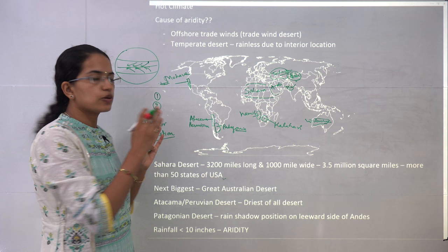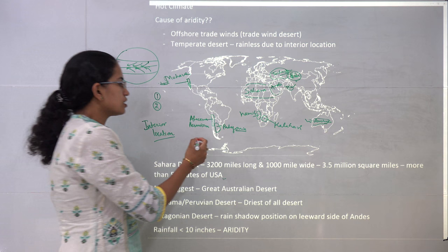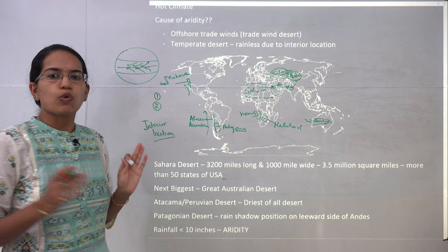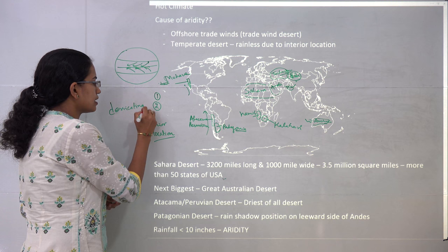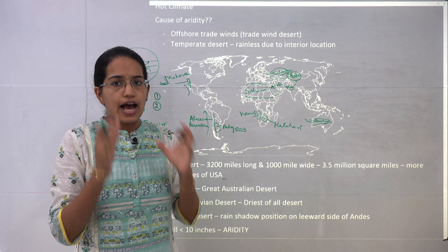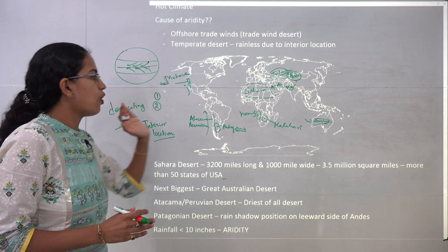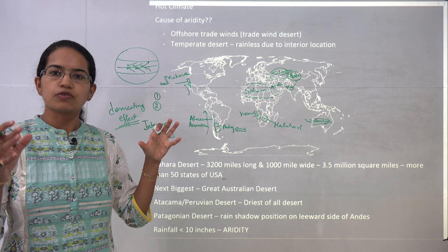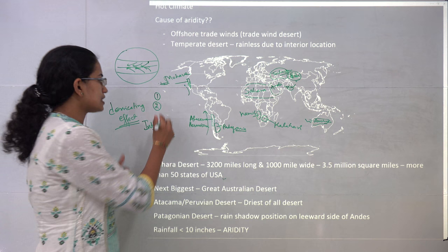The second important reason is the cold ocean current. You have cold currents along the coast — such as along the coast of west America. These cold currents create a desiccating effect, which means they do not allow moisture to condense and form clouds. As a result, cloud formation is hindered. That is the second major reason.